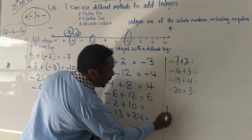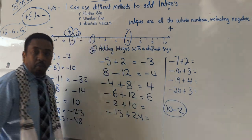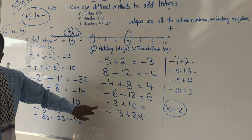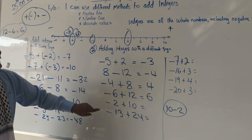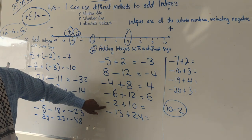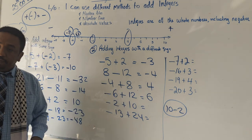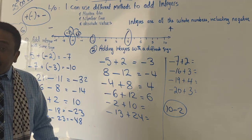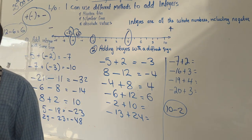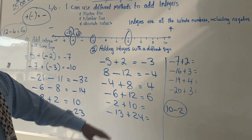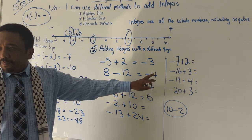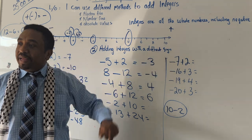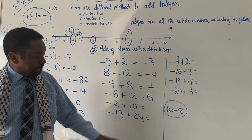For minus 2 plus 10: it's the same as 10 minus 2, which is 8. So the answer is 8. The answer is positive because the small number — 2 — is carrying the negative. If it were minus 10 plus 2 instead, then the big number carries the negative, and the answer would be minus 8.